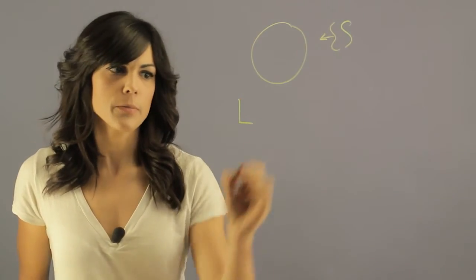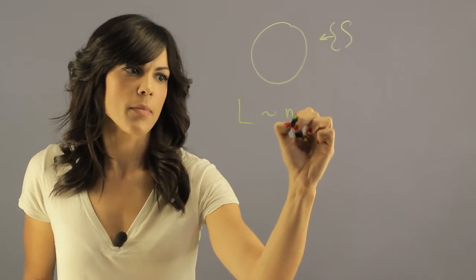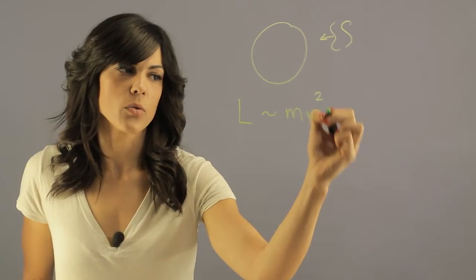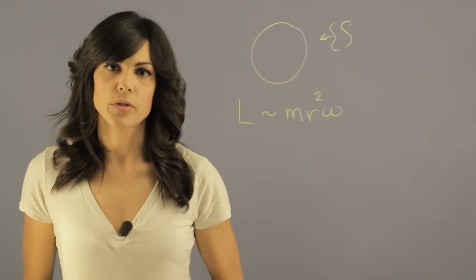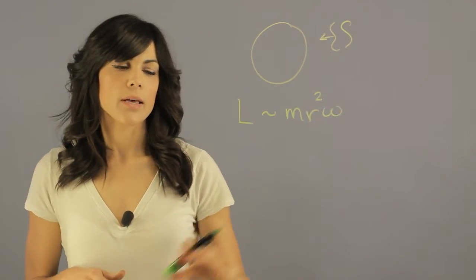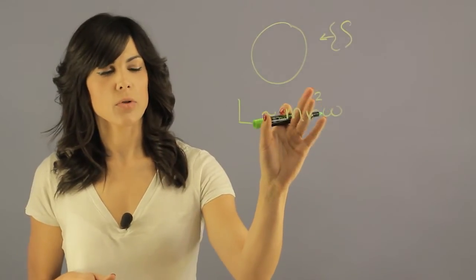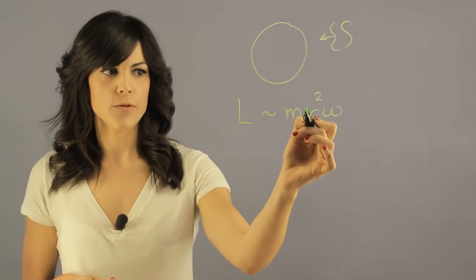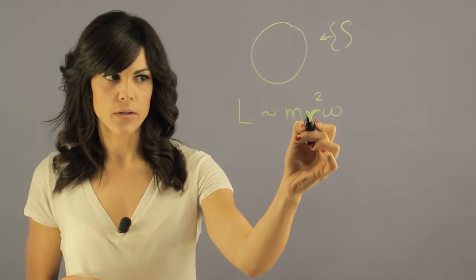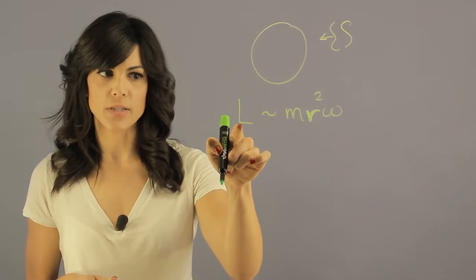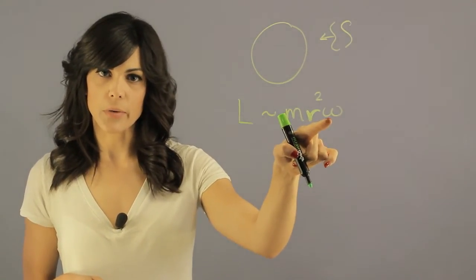Now angular momentum is about the mass, the radius squared, and your rotational speed. So if you actually look at this, if your radius begins to shrink, but you want to keep this energy the same, this has to increase.